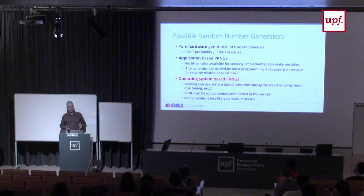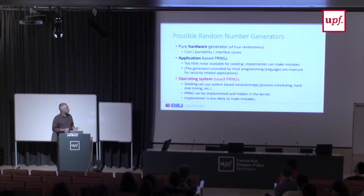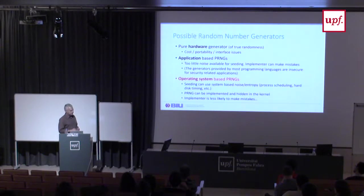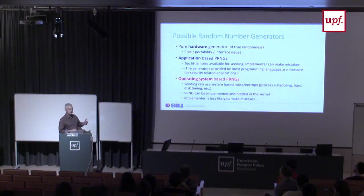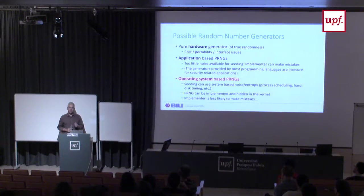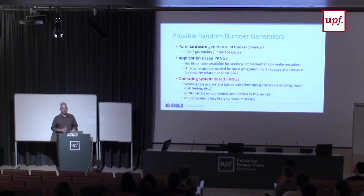The OS can access system events like hardware random number generators, timing, user keystrokes, etc. It can provide an API giving access to random numbers to any application. And since we only write it once for all users of the system, the implementer can be more educated and do their work better than some application writer who has a lot of other things to do.